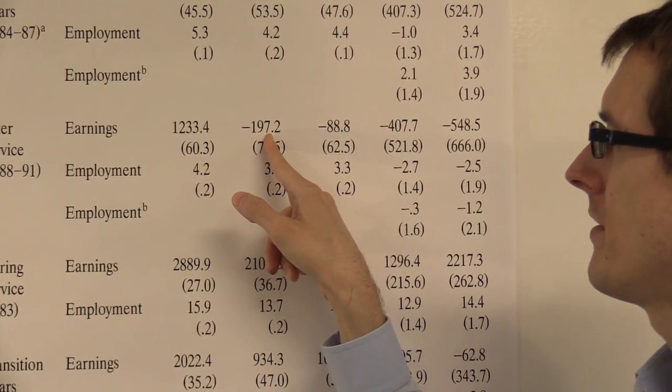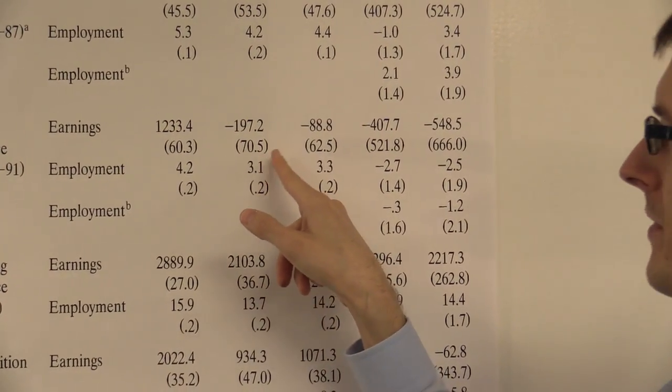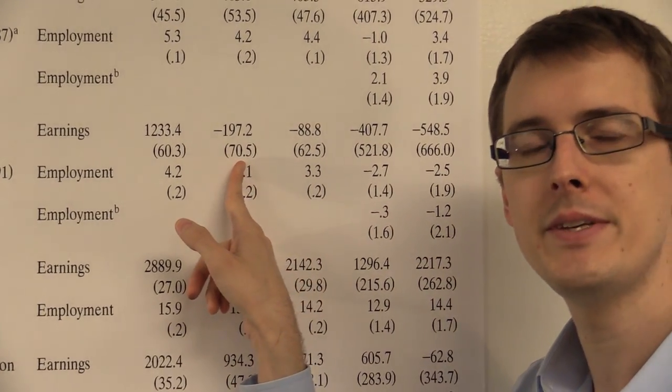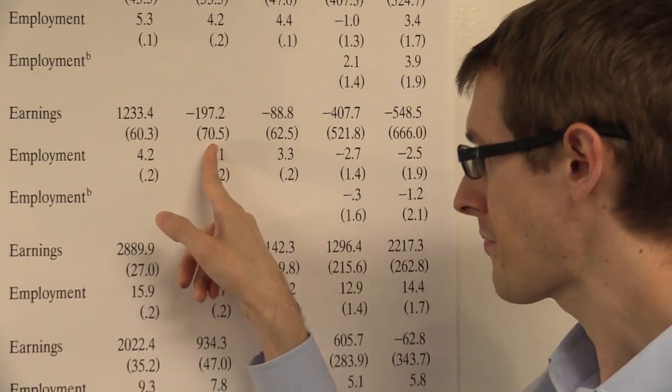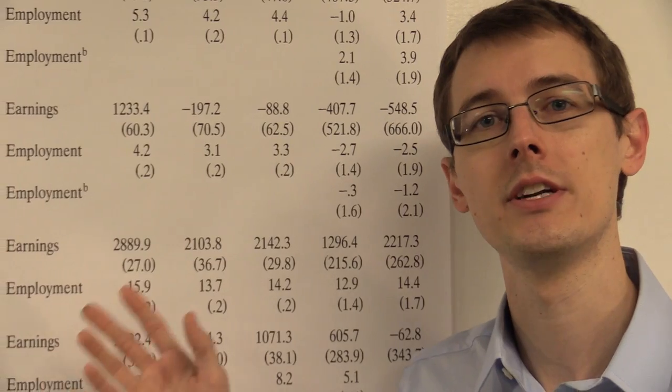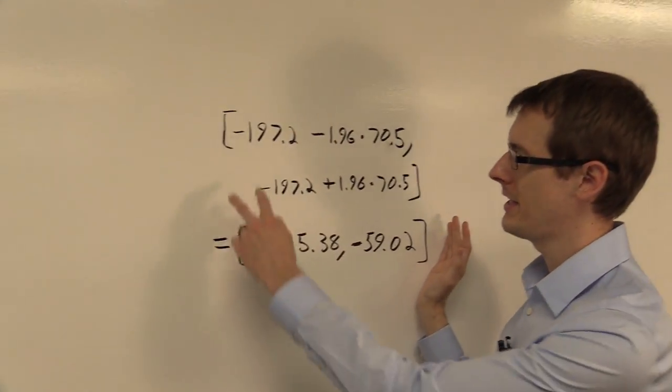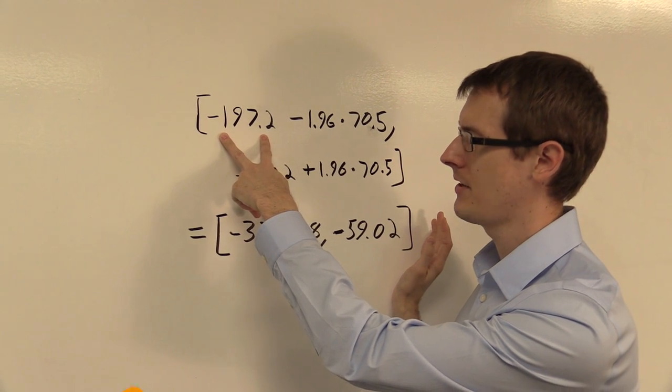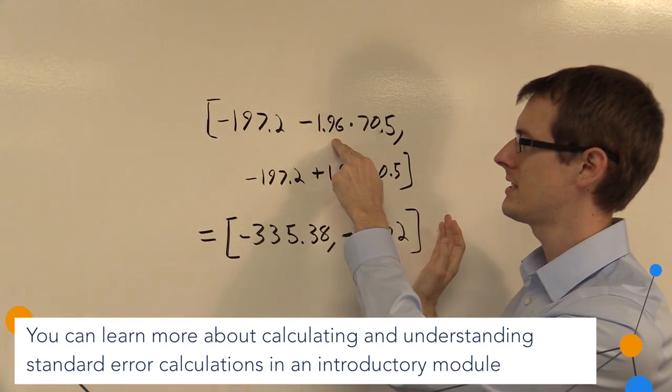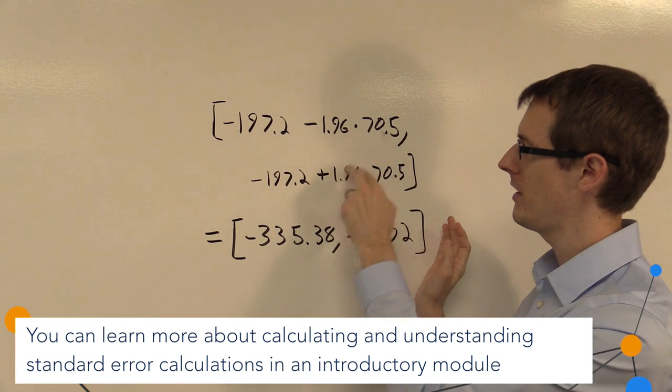So let's look at the confidence interval for just this number here, minus $197.20. So this here, 70.5, is the estimated standard error. So we can use that to construct a 95% confidence interval, which I've drawn right here. Take our point estimate, $197, minus 1.96 times the standard error, 70.5.